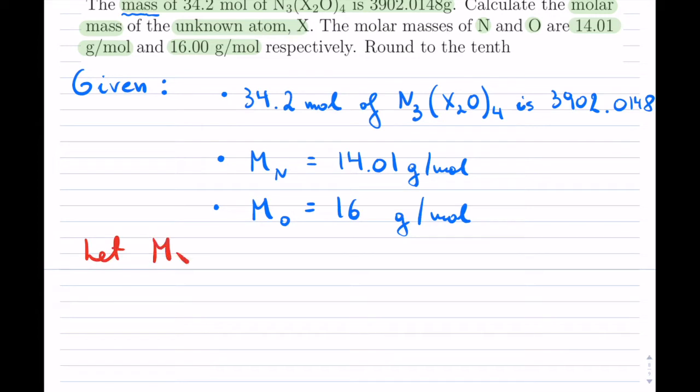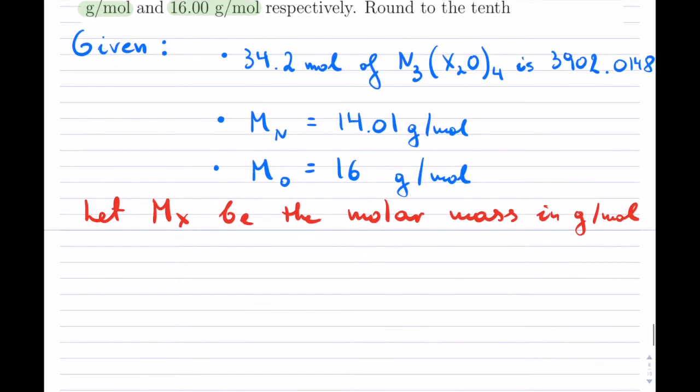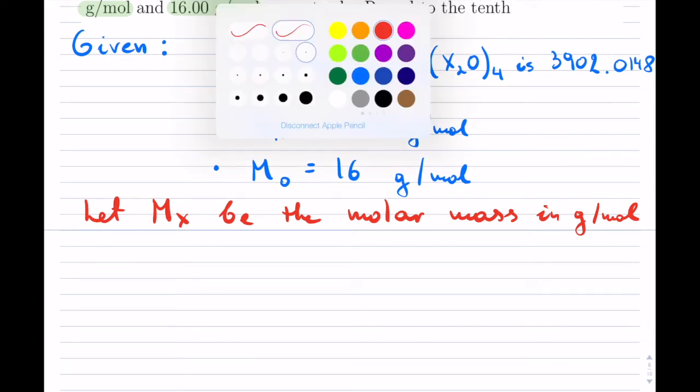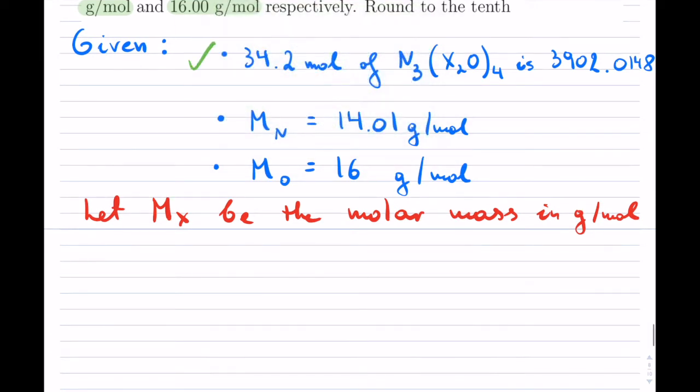Now, we also know the molar masses of nitrogen and of oxygen. Let the molar mass of the unknown X be—this is going to be in grams per mole. Let's try to now dissect this entire thing here.